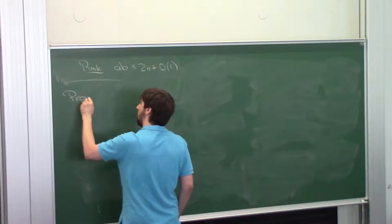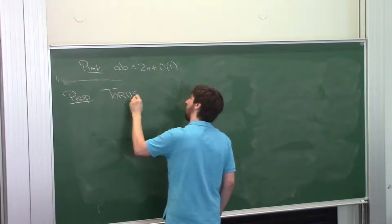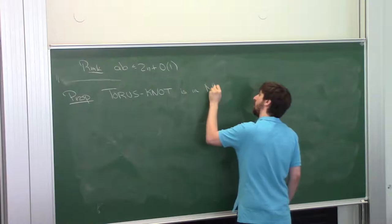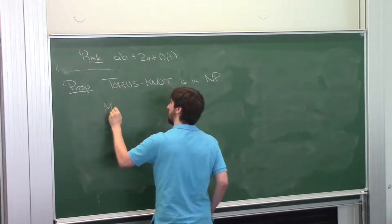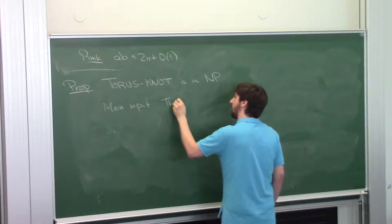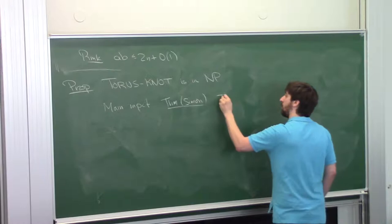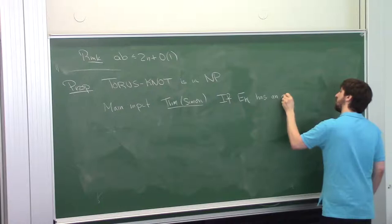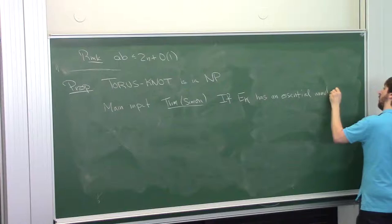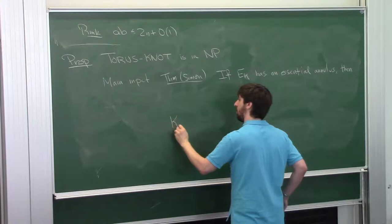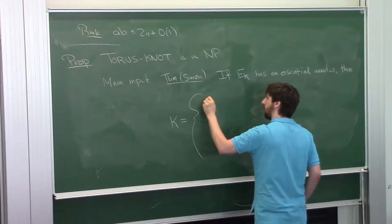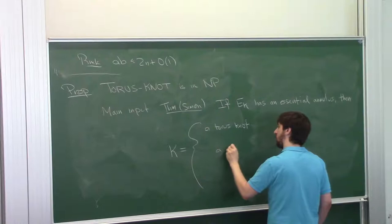That's why these two questions are equivalent. Now I'll go back and forth between finding a torus knot generally and finding a specific torus knot. First proposition: torus knot recognition is in NP. The main geometric input is a theorem of Simon from the early 1970s. If you have a knot whose complement has an exterior essential annulus — meaning incompressible and not boundary parallel — then the knot could be one of three things: a torus knot, a cable, or a connected sum.